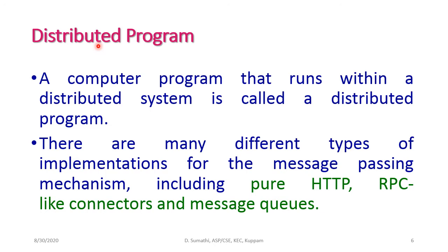A distributed program is a computer program that runs within a distributed system. There are many different types of implementations for the message passing mechanism, because all the computers connected in the distributed network communicate through message passing only. These implementations include pure HTTP (Hypertext Transfer Protocol), RPC (Remote Procedure Call), and message queues, by which systems communicate with each other.